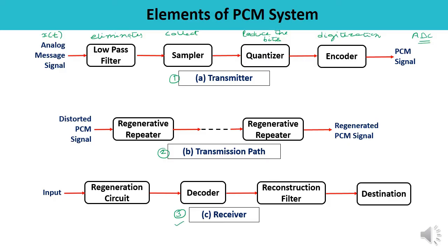The third and important part is the receiver, which contains a regeneration circuit, decoder, and reconstruction filter. Since analog-to-digital conversion was performed at the transmitter, at the receiver a reconstruction filter — which is essentially a low pass filter — is employed to get back the original signal. At the output, we usually get an estimation of the original signal, though it is almost impossible to recover the exact message. The decoder decodes the pulse-coded waveforms to produce the original signal, acting as a demodulator.